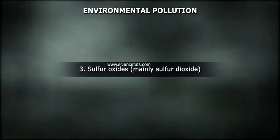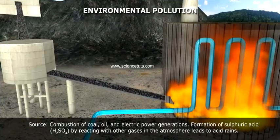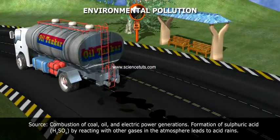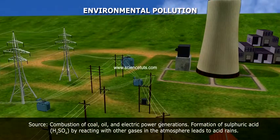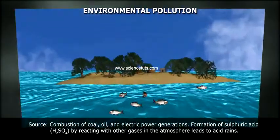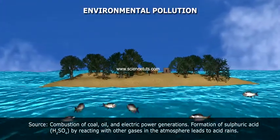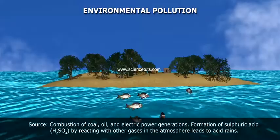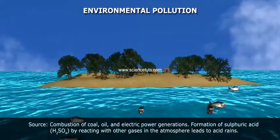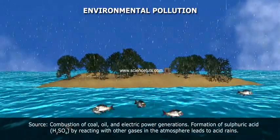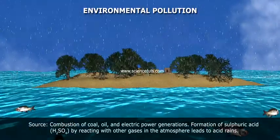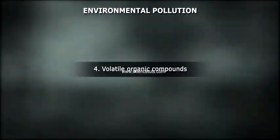3. Sulphur Oxides — mainly sulphur dioxide (SO2). Source: combustion of coal, oil, and electric power generation. Formation of sulphuric acid (H2SO4) by reacting with other gases in the atmosphere leads to acid rain.